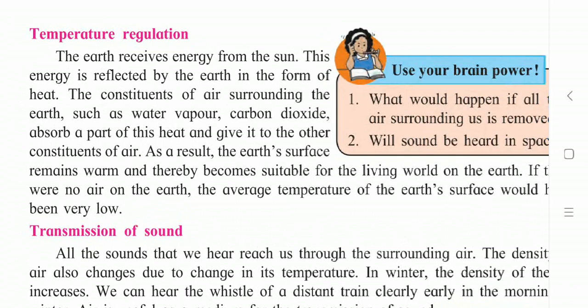Temperature regulation. The earth receives energy from the sun. This energy is reflected by the earth in the form of heat. The constituents of air surrounding the earth such as water vapor, carbon dioxide absorb a part of this heat and give it to the other constituents of air. As a result, the earth's surface remains warm and thereby becomes suitable for the living world on the earth.